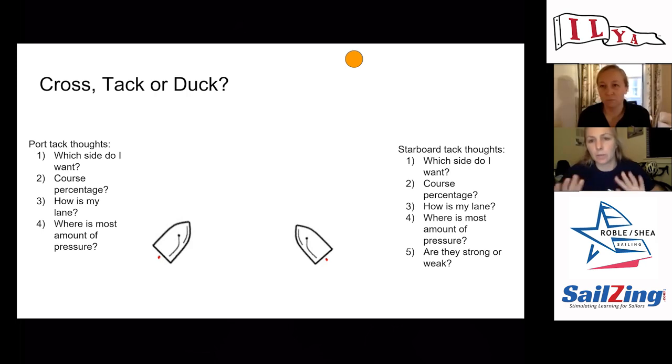We talked about boats being weak and strong for a lee bow. Anytime we come into a crossing situation like this, if we're the starboard boat or the port boat, we're thinking about: do we have a strong lee bow if we want to go that way? So thinking about cross, tack, or duck - which side of the race course do I want? If I'm the port tack boat here and I want to continue straight because I'm close to the lay line, then I'm going to set up for a duck.